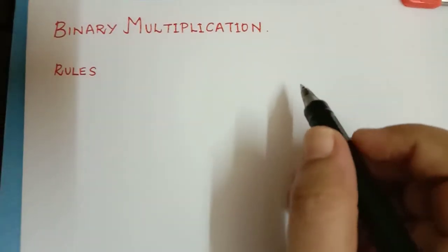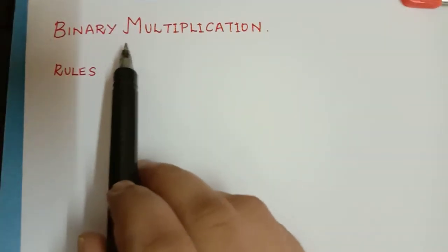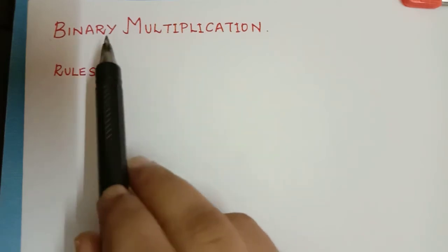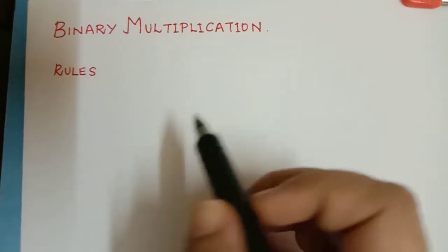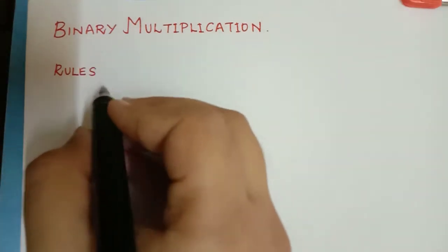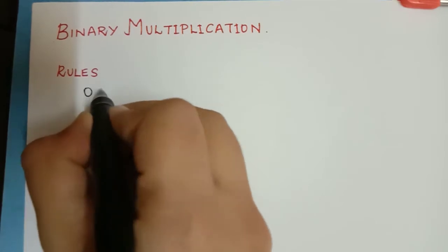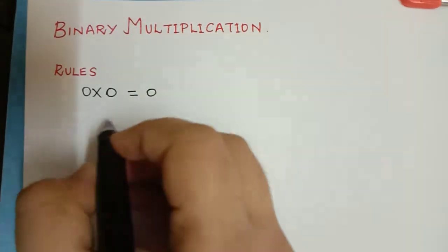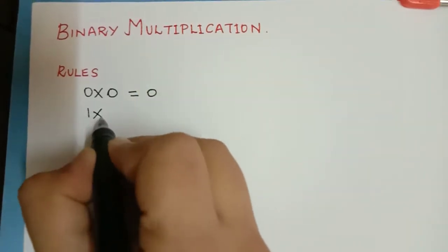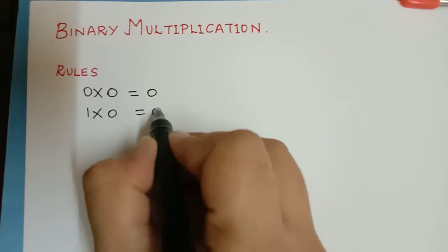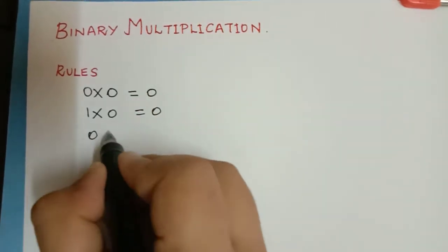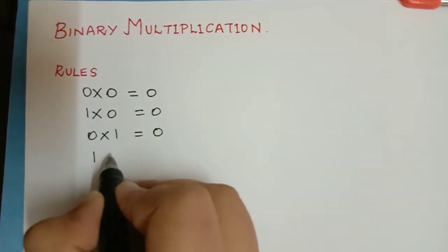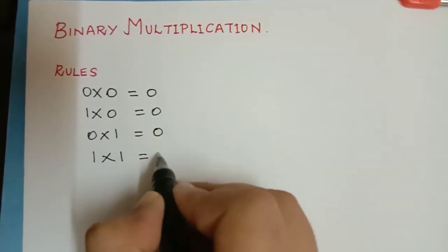Dear students, we shall now learn about binary multiplication. There are certain rules for binary multiplication and the rules are like simple decimal multiplication only. That is, 0 multiplied with 0 gives 0, 1 multiplied with 0 gives 0, 0 multiplied with 1 is also 0, and 1 multiplied with 1 is equal to 1.